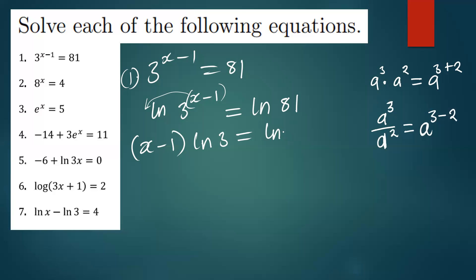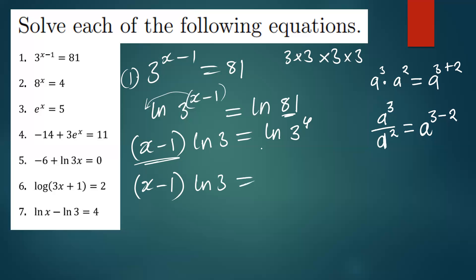This equals ln(81). Now 81 can be written in terms of 3: since 3×3=9, ×3=27, ×3=81, so 81 = 3^4. Therefore ln(81) = ln(3^4), and that 4 drops down to become the coefficient, giving us 4·ln(3).